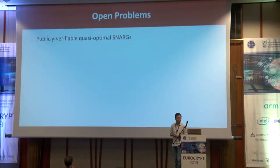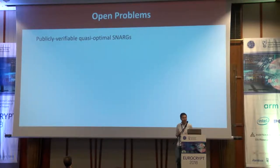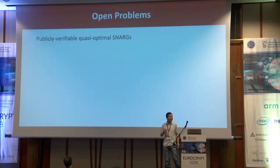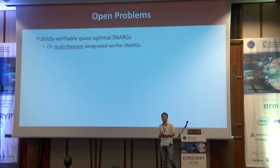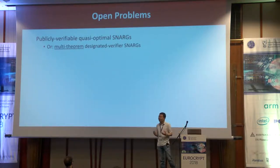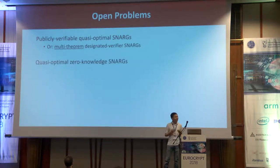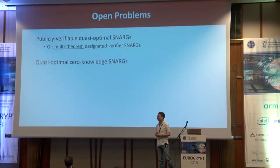Let me give a few open problems raised by our work. All of the constructions described are in a designated verifier setting, so a natural challenge is building publicly verifiable SNARKs that remain quasi-optimal. Perhaps the first step is realizing multi-theorem designated verifier SNARKs, since the constructions described are only secure in a single-theorem setting. Another challenge is achieving zero-knowledge for these SNARKs without destroying the quasi-optimality of the underlying construction.